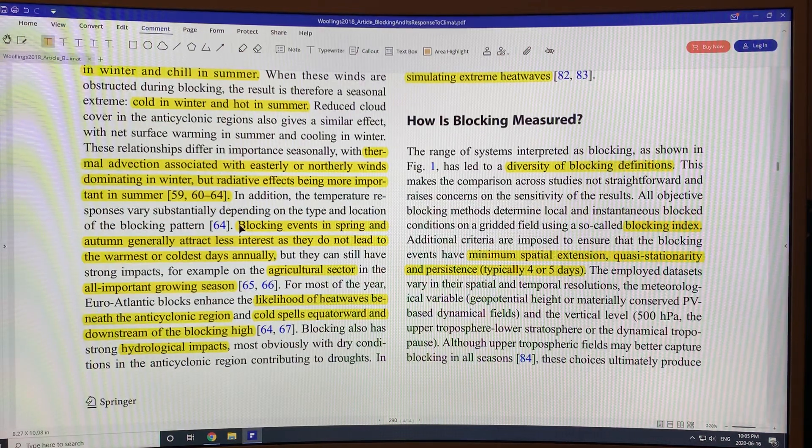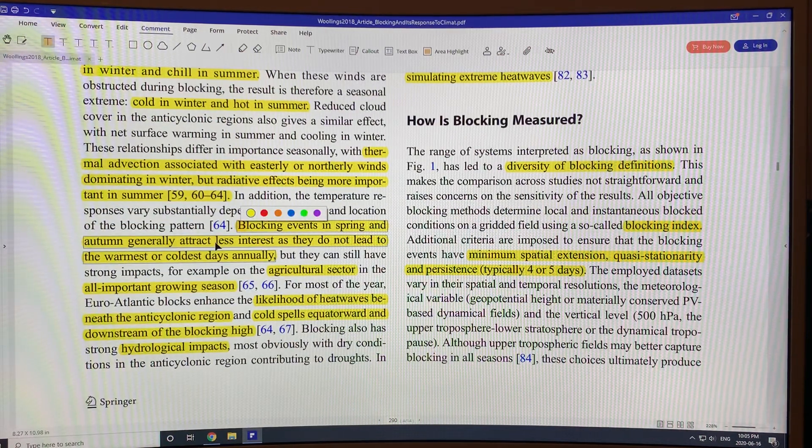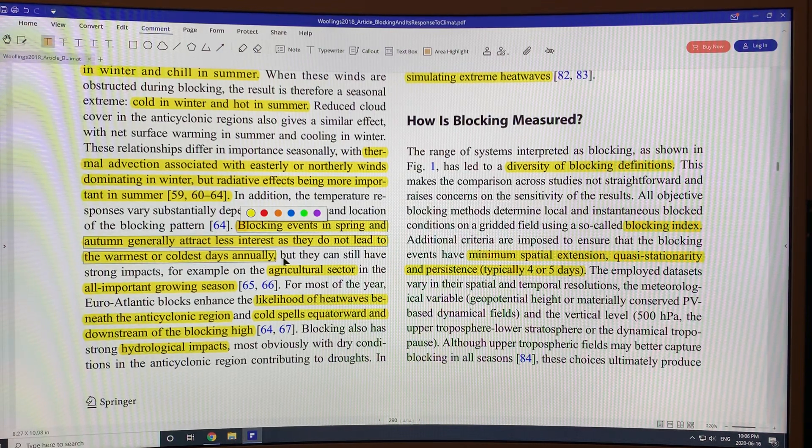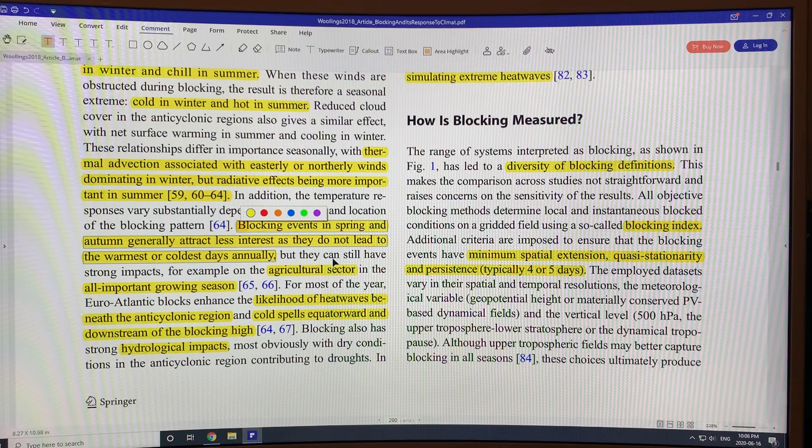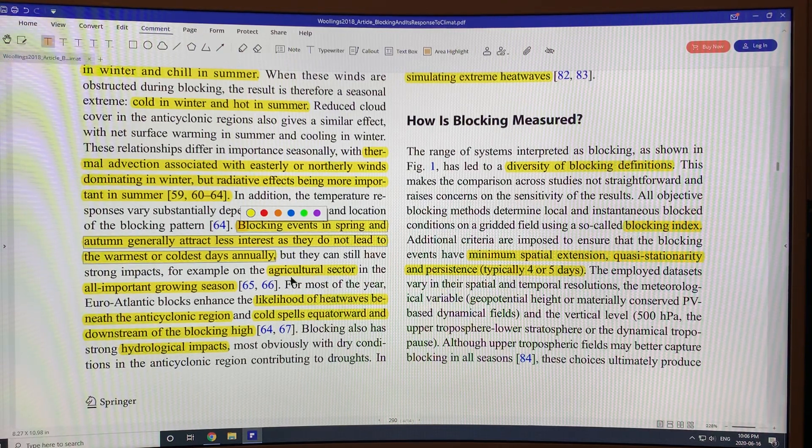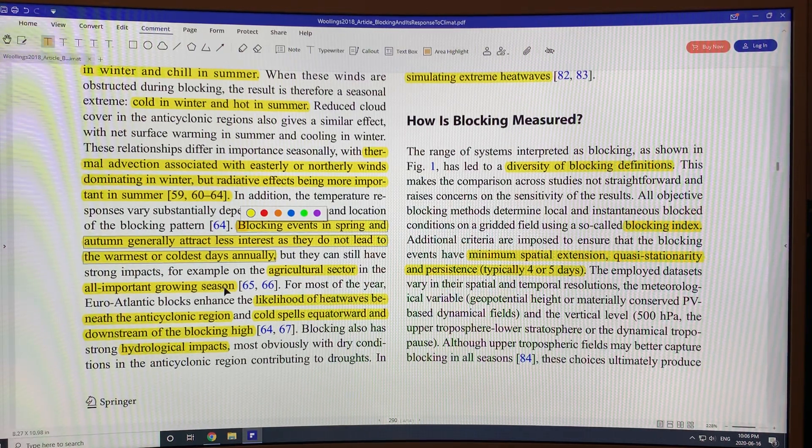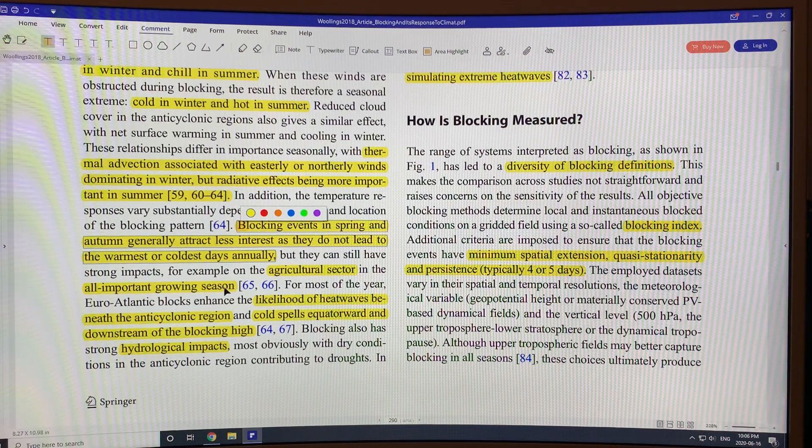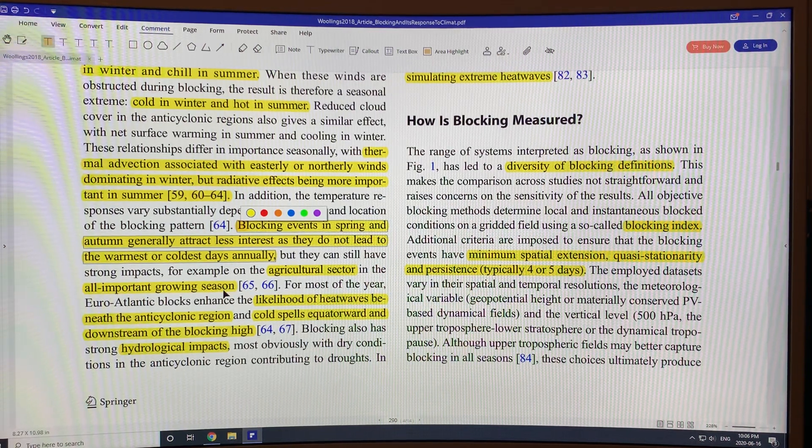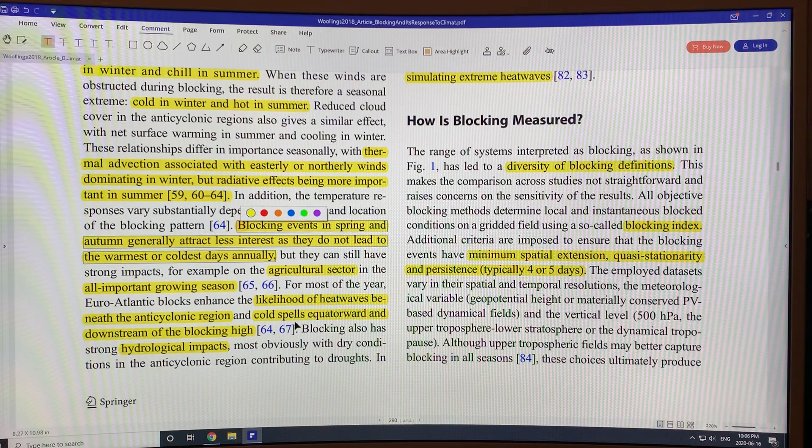There's a lot of blocking events in the spring and autumn, but they don't lead to the warmest and coldest days annually. So we don't tend to think of them, but they do affect the agricultural sector, for example, and the growing season. So if there's multiple blocks over agricultural growing regions, then we can experience global food shortages.